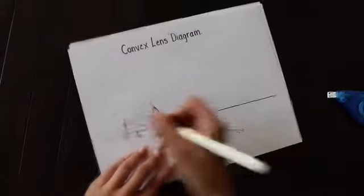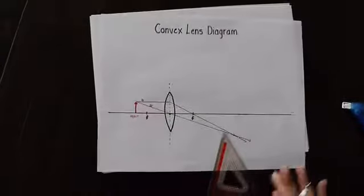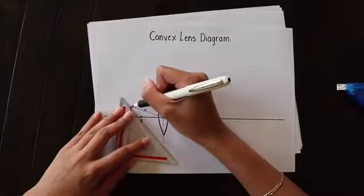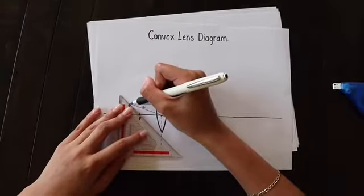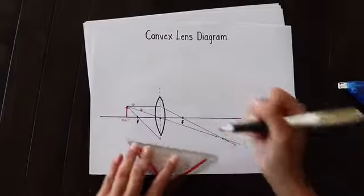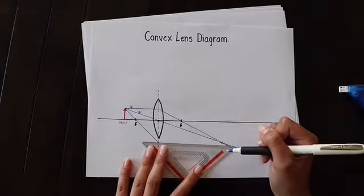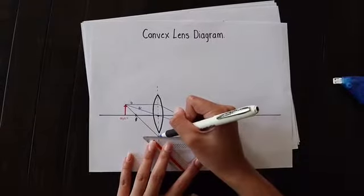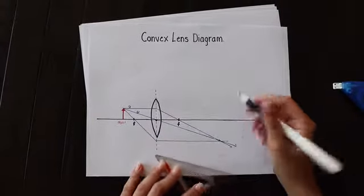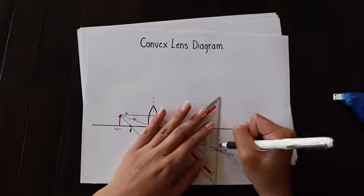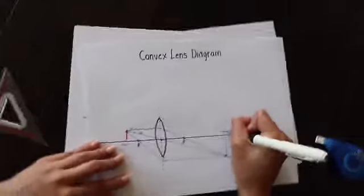So as you can see, that's ray one, ray two. The third ray is going to go through the focal point on this side. When it hits the center of the lens, it is going to refract parallel. As you can see, they all intersect over here at this point, creating the image.